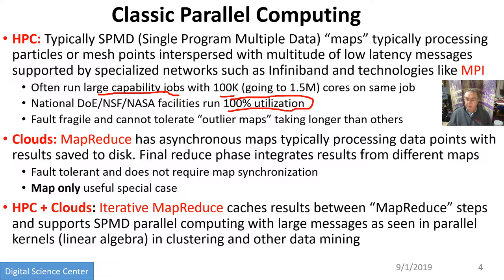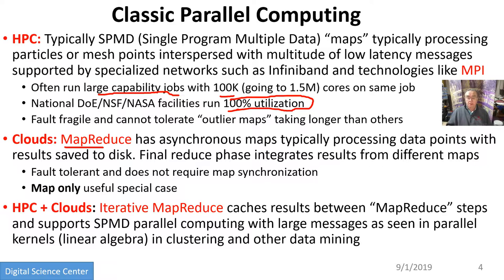All the maps take the same time, because otherwise if you have 100,000 cores and one core is slow, you're doomed. MapReduce is different because you can have stragglers. If 99 processes finish and one process takes 100 times longer, you just wait for it to finish. Those 99 are done, and you can reuse all those nodes to do something else. Whereas in classic parallel computing you cannot do that, because the nodes have to do something, then communicate, then iterate and come back. So iterative problems are much harder.